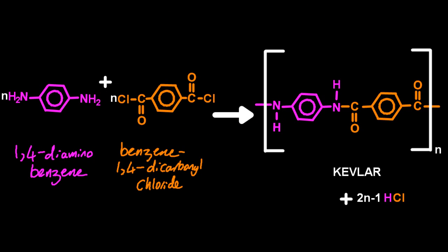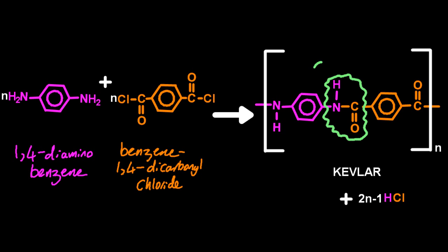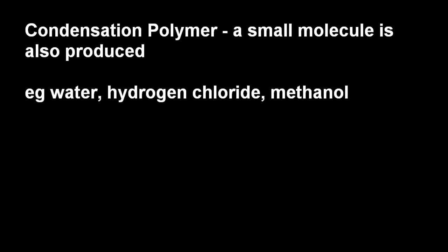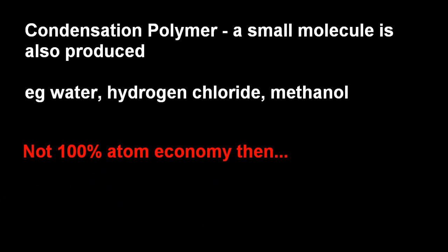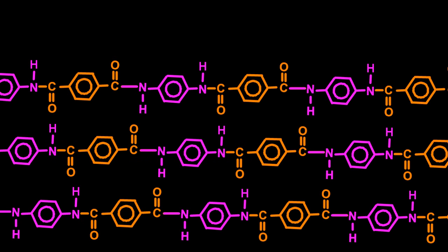Here's the equation written out in full. It's 2n minus 1 of those tiny molecules of HCl that are produced from n of each reactant. The chlorine and one of those hydrogens come off. The amide group is highlighted here — there are many repeating units, n of them, so this is a polyamide. 'Poly' means many. It's a condensation polymer, which means a small molecule is also produced: water, hydrogen chloride, methanol, or even ammonia. So it won't be 100% atom economy — some waste is made.